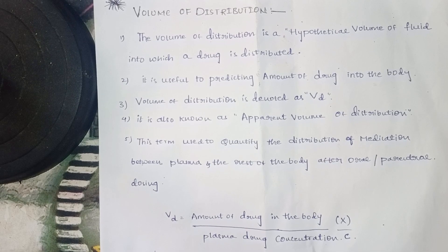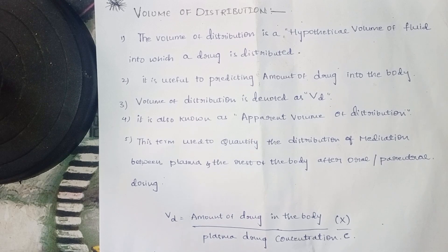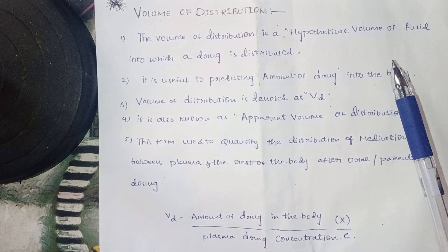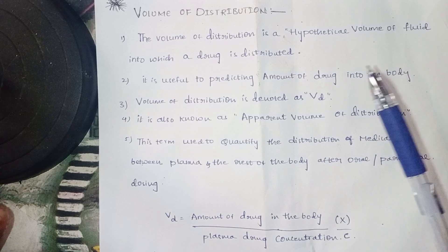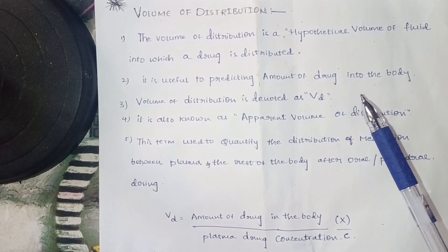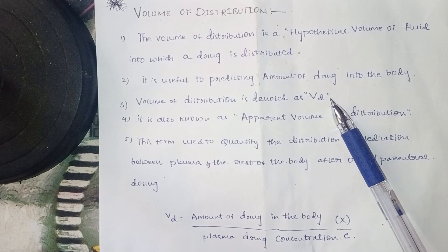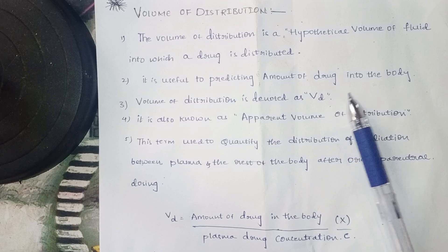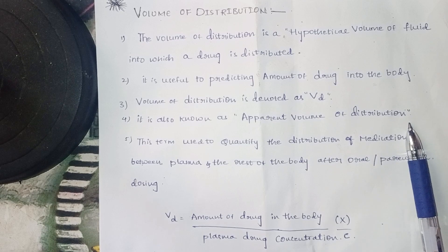The volume of distribution is a hypothetical volume of fluid into which a drug is distributed. Remember, it is hypothetical — it is an assumption. This fluid is essentially plasma. It is useful to predict the amount of drug in the body. It is defined as VD and is also known as the apparent volume of distribution.